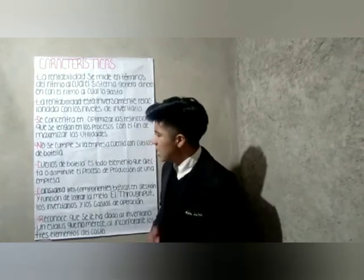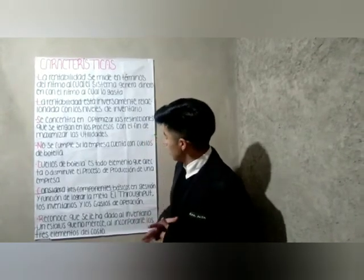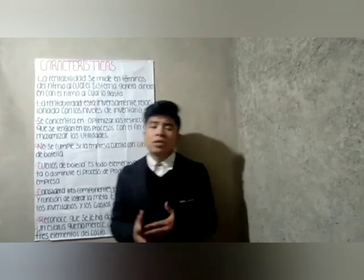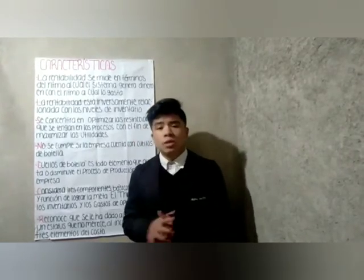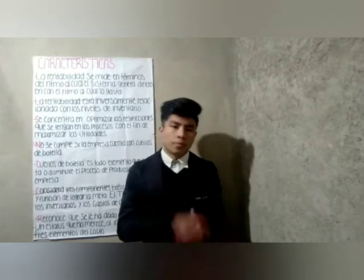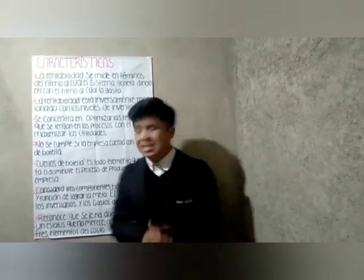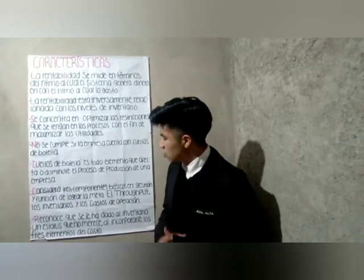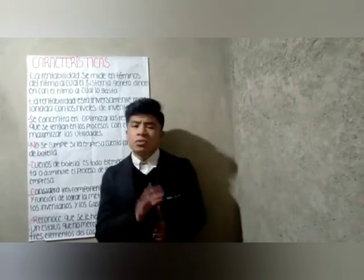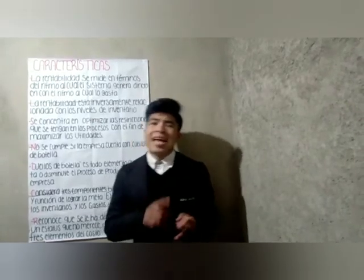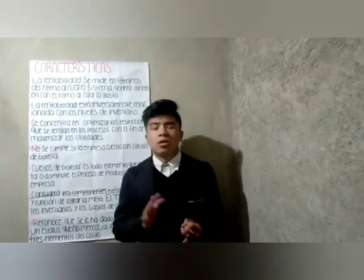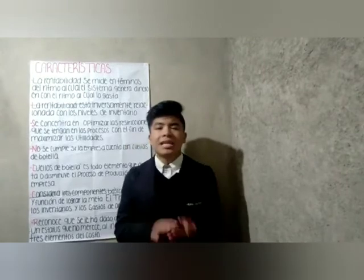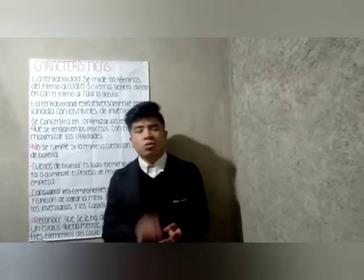La quinta característica son los cuellos de botella: todo elemento que afecta o disminuye el proceso de producción de una empresa, ya sea incrementando los tiempos de espera o disminuyendo la productividad. La sexta característica considera tres componentes básicos en gestión para lograr la meta: el Throughput, que corresponde a todo el dinero que ingresa al sistema; los inventarios; y los gastos de operación.